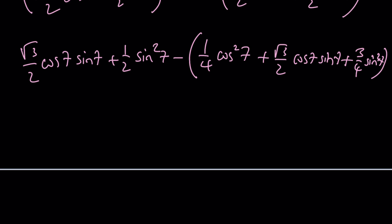So far, so good. Now, let's go ahead and expand. And you're going to realize these two terms cancel out. We end up with this 1 half sine squared 7 minus 1 fourth cosine squared 7 minus 3 fourths sine squared 7.